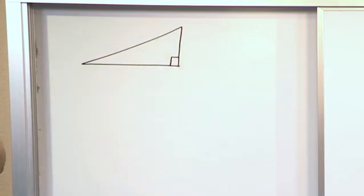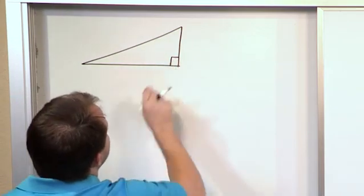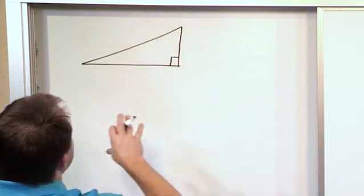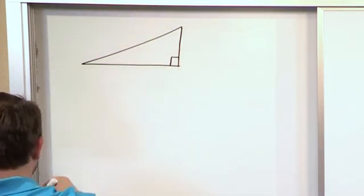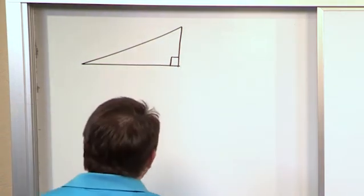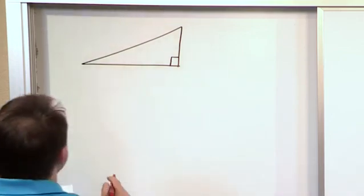So we put a little square there to represent or to signify that this is a 90 degree angle here. And when you have a triangle with one 90 degree angle in there, and if you label everything else as follows, you can do some interesting things.